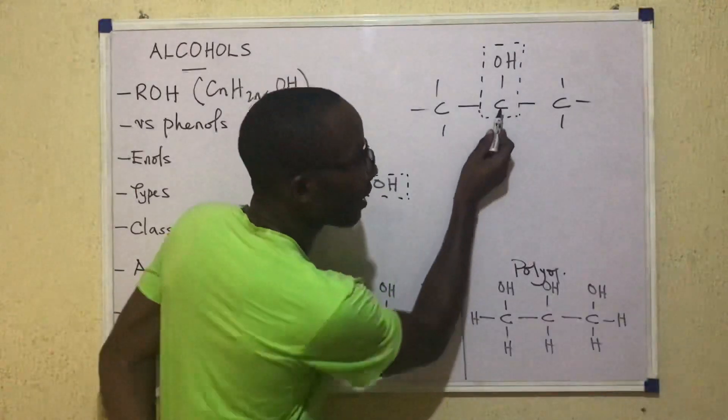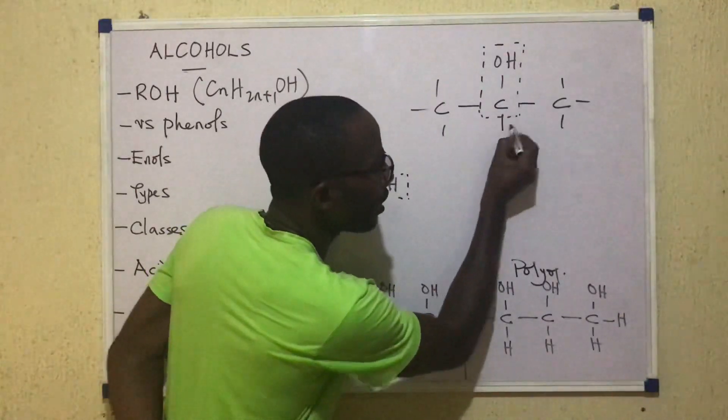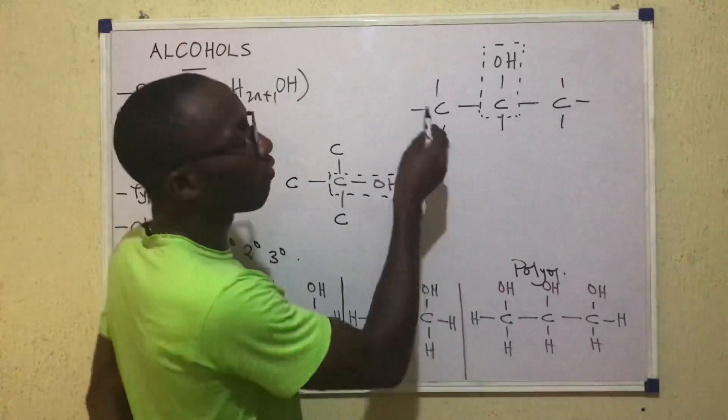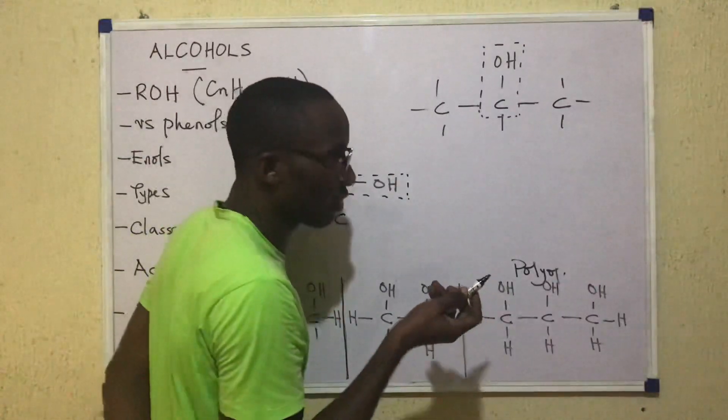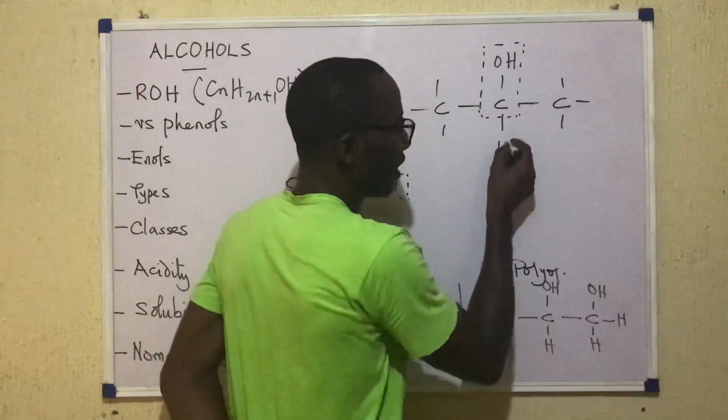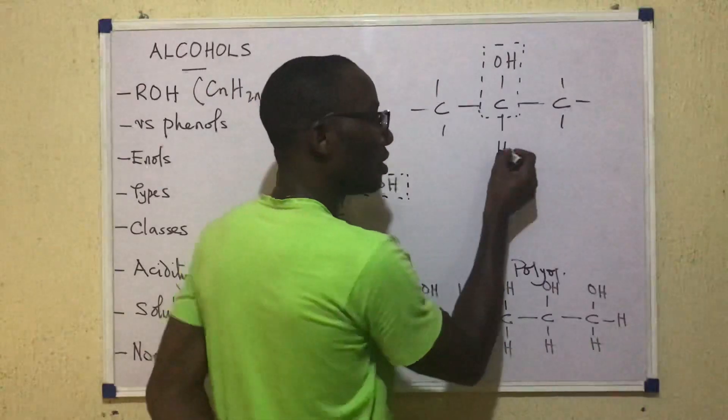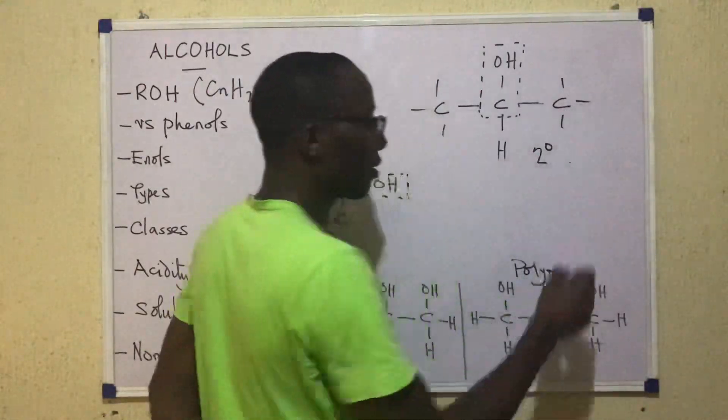Well, if you isolate the carbon bearing the OH like this, you discover that that carbon still has one, two, three bonds. And the question now is, of those three bonds, how many lead us to carbon? This leads us to H. Those two lead us to C and C. So this alcohol would be secondary.